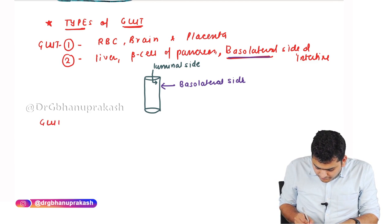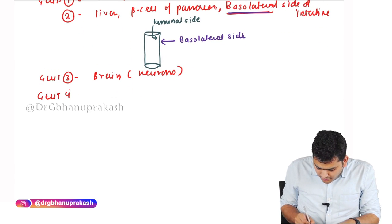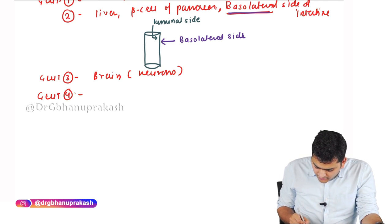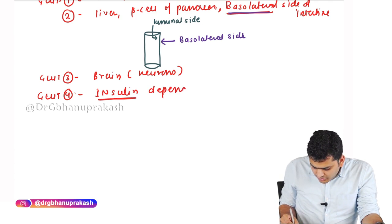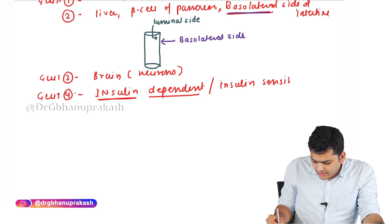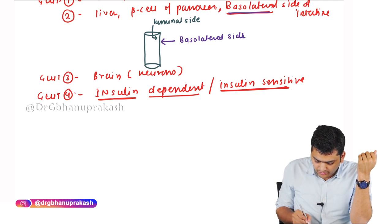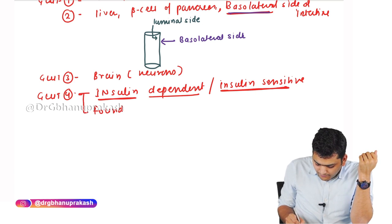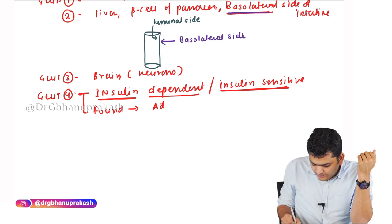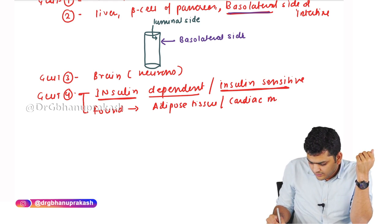GLUT 3 is found in brain neurons. GLUT 4 is very important — it is insulin dependent, also called insulin sensitive. This means GLUT 4 will only work and express when insulin is present. It is found at three places: adipose tissue, cardiac muscle, and skeletal muscle.